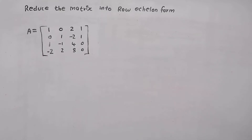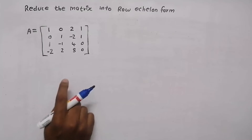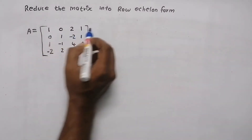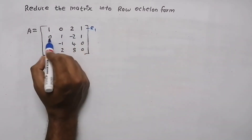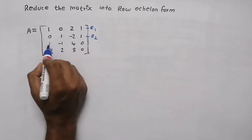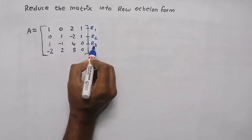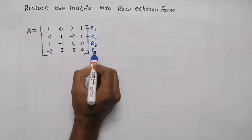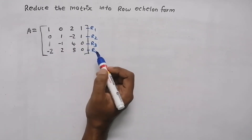In this video, we are going to reduce the matrix into its row echelon form. So when you get a question like this, the first thing that you need to do is write the number of rows. This is our first row, we are going to write it as R1. This is our second row, R2. This is our third row, R3. And this is our fourth row, R4.